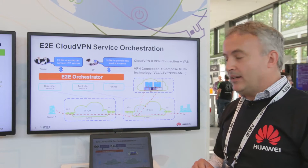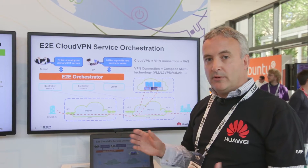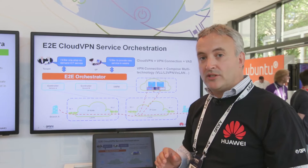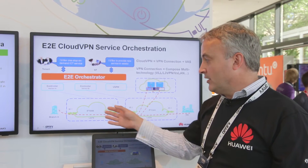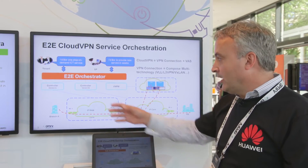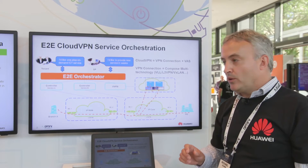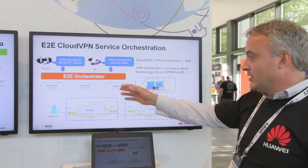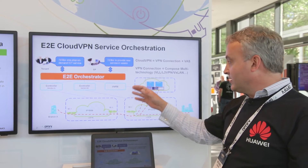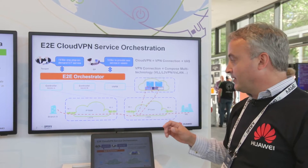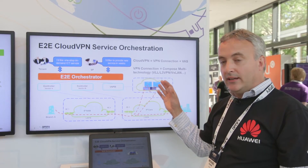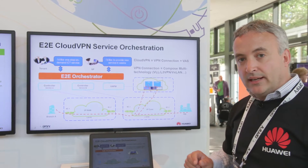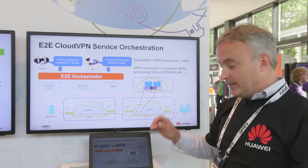In this picture we show that we have an end-to-end orchestrator that goes over the network, showing an integration of two controllers. One controller is over an IP RAN network and the second controller is looking at an IP core. We also have a VNFM — a virtual network function manager — which is taking care of the management of the firewall and the DHCP service. We're going to provide an overview and a video of this today.